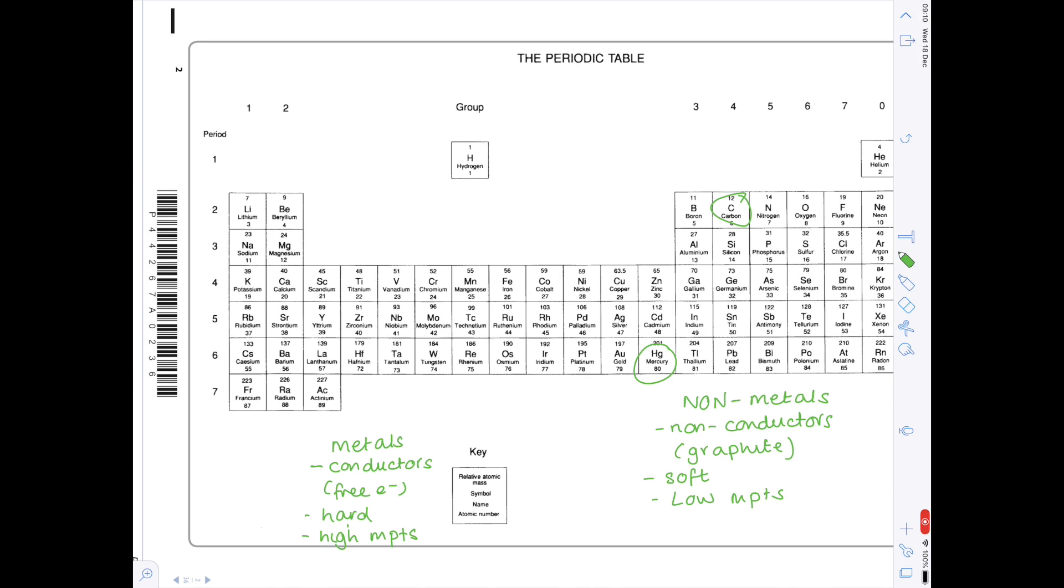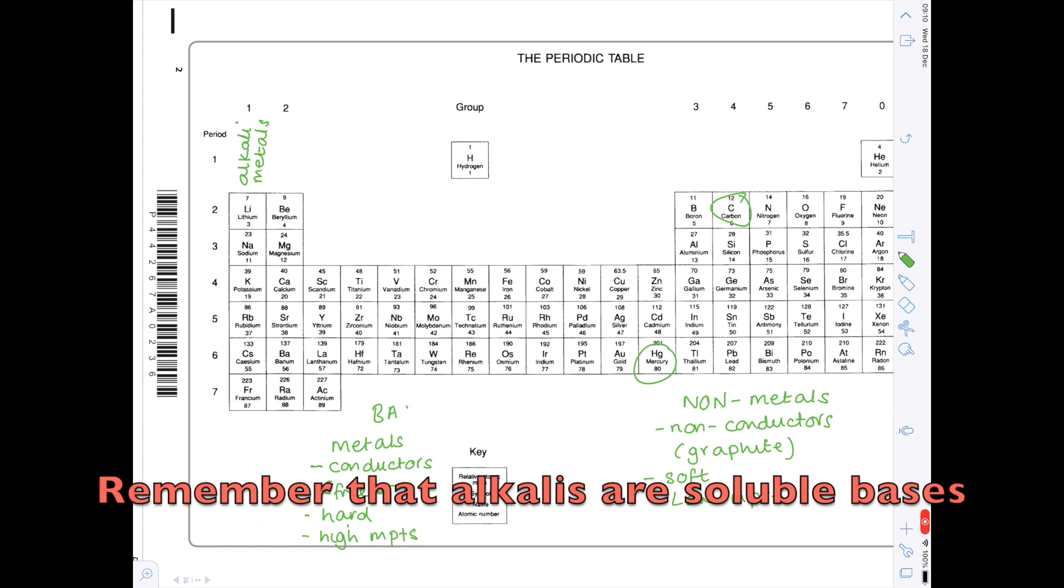So now what can we also determine from the periodic table? Well remember that group 1 metals are known as the alkali metals. This means that when they are added to water they produce an alkaline solution. So hopefully therefore that will help you realize that metals produce basic oxides.